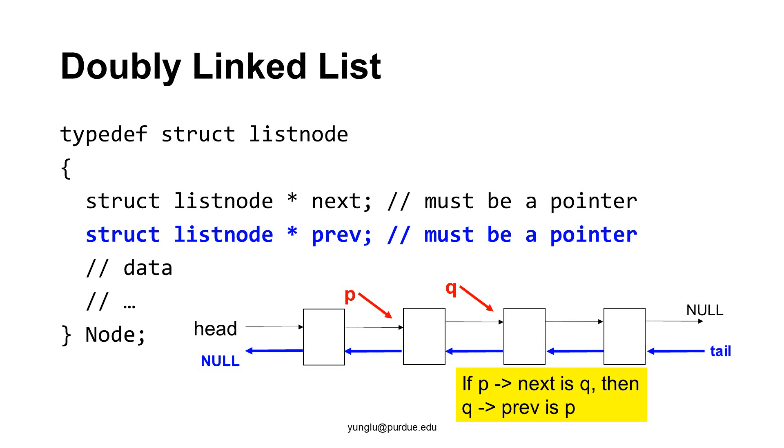At the same time, P points to the same node as Q's previous. That means the address stored in P's value is the same address stored in Q arrow previous. A doubly linked list usually maintains two pointers, head and tail. They point to the two ends of the linked list. Null is used at both ends to indicate there is no next node or previous node at the end.